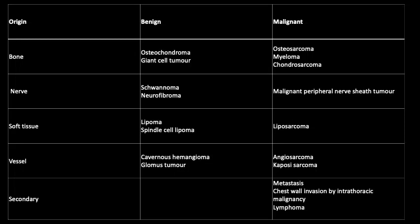Benign nerve tumors include schwannoma and neurofibroma, while malignant nerve tumors include malignant peripheral nerve sheath tumor. Benign soft tissue tumors include lipoma and spindle cell lipoma, and malignant soft tissue tumor is liposarcoma. Benign vascular tumors include cavernous hemangioma or glomus tumor, and malignant types include angiosarcoma and Kaposi's sarcoma.